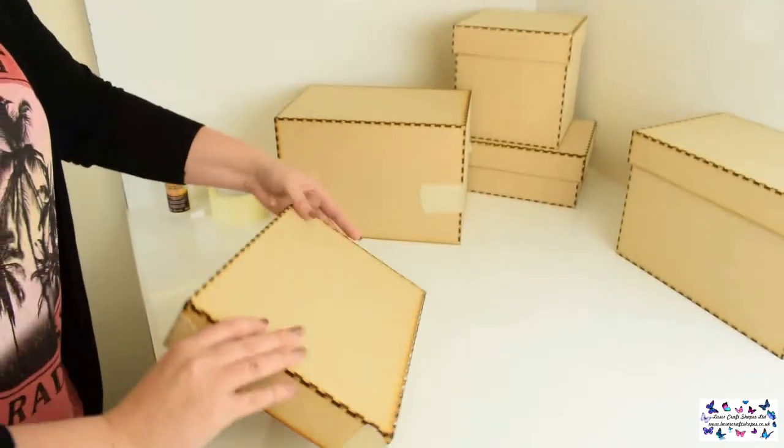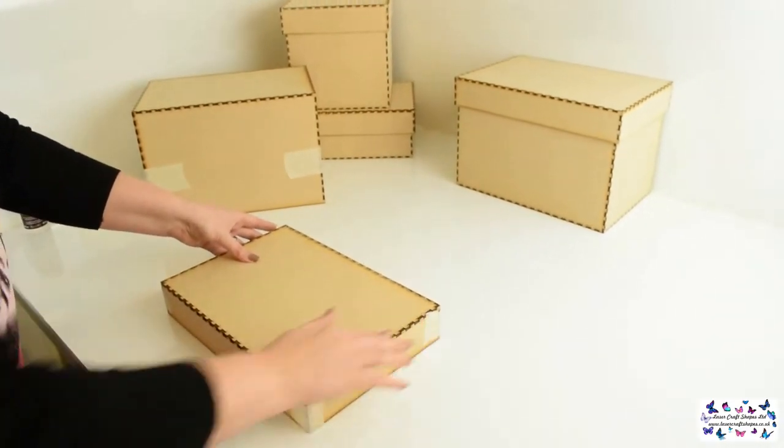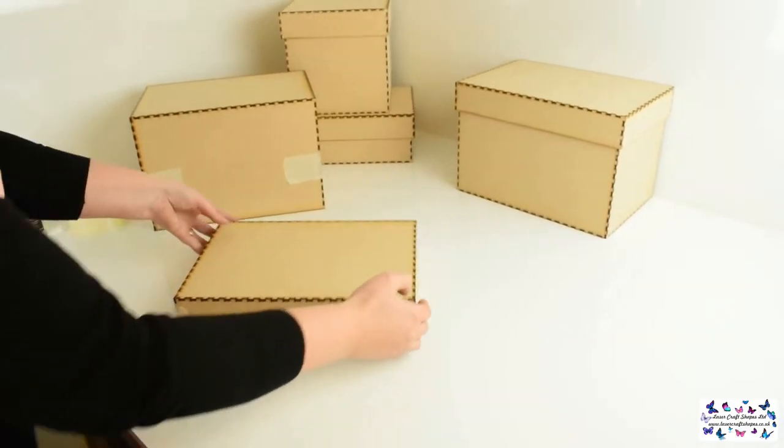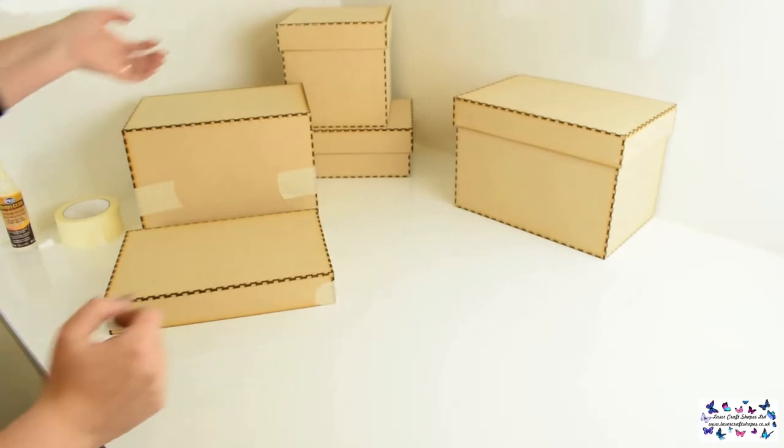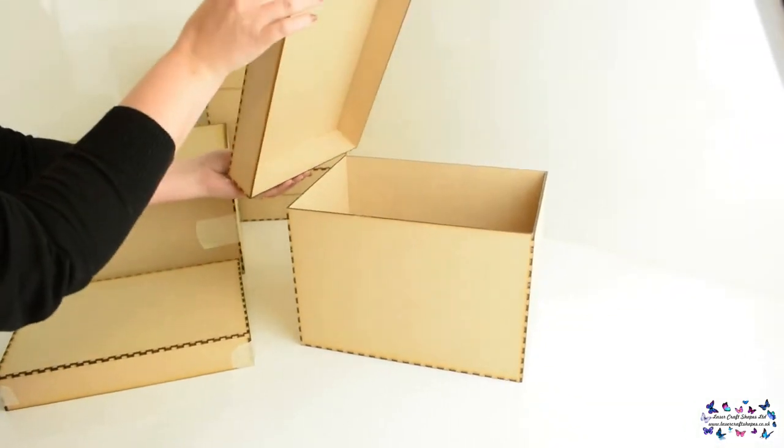Turn this one over and leave that one to dry. Wipe off any excess glue that may be on there. You now have your completed box with lift off lid.